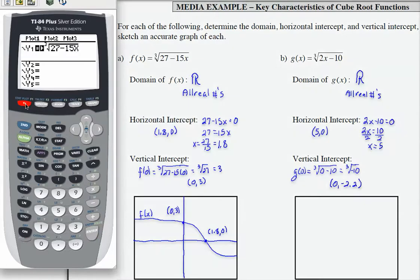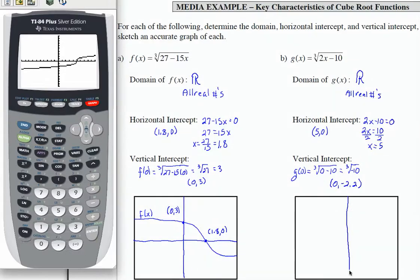Let's go back to our y equals and enter our function. So we're going to clear out what's in y1. I need math, option 4 gives me a cube root, 2x minus 10. I'm going to end my radical by using the arrow key. I'm going to leave the standard window that I had in the first problem and press graph, and see if that will give me a decent shape. And that's pretty good. I don't think I need to change my window.